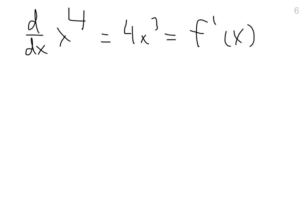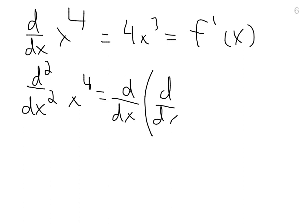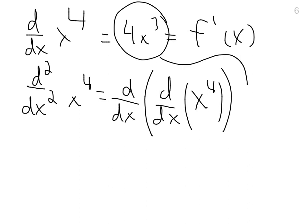Now, what if we wanted the second derivative with respect to x? Well, if you want to do that, you would do d²/dx² of x to the fourth, which is equal to d/dx of d/dx of x to the fourth. So if you take the derivative of this, you would get 4 times 3 is 12x squared, and that is equal to f double prime of x.